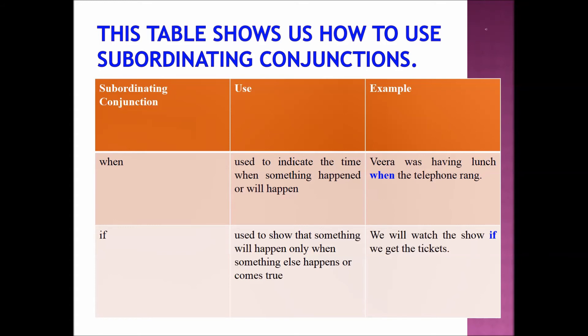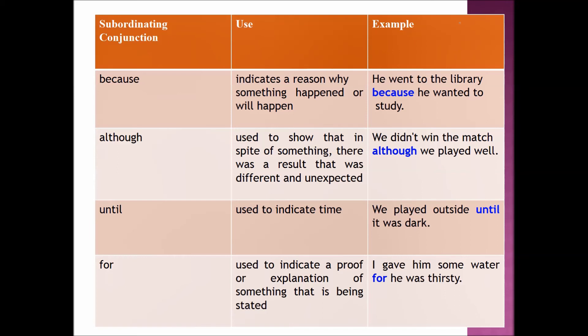BECAUSE indicates a reason why something happened or will happen. Example sentence: 'He went to the library because he wanted to study.' ALTHOUGH is used to show that in spite of something, there was a result that was different and unexpected. Example sentence: 'We didn't win the match although we played well.'